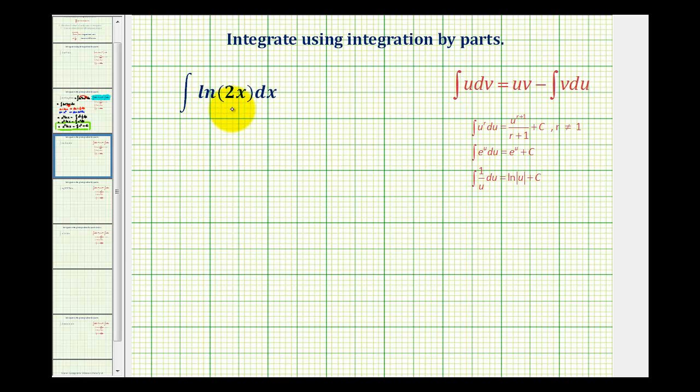We want to evaluate the integral of natural log 2x with respect to x. This doesn't fit any of the basic integration formulas, and integration by substitution doesn't work either. So we're left to try integration by parts.